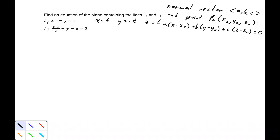And for the second line L2, x equals 2t plus 3, so 3 + 2t, y equals t, and z equals 2 + t.